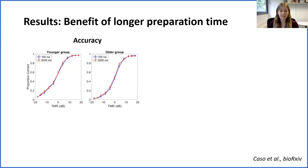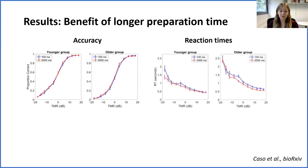The blue line shows performance in the shorter preparation time condition and the red line shows performance in the longer preparation time condition. While the two lines are quite close together, the red line is slightly higher than the blue line for accuracy, and slightly lower for reaction times, indicating better performance in the longer cueing condition. The difference between conditions was smaller than expected, especially for the younger group — this could potentially be because we simulated location with ITDs rather than presenting stimuli in free field as we had previously. We quantified the benefit in each group by calculating the area between the curves for the two conditions.